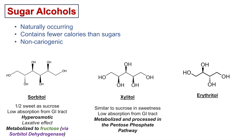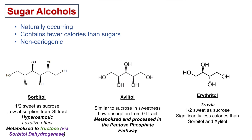The last sugar alcohol we're going to talk about is erythritol, whose trade name is Truvia. It's about half as sweet as sucrose and has significantly fewer calories than sorbitol and xylitol. The reason is that erythritol is absorbed but does not become metabolized, which is a big reason why it doesn't contribute as many calories.